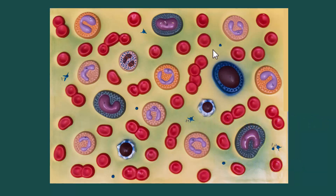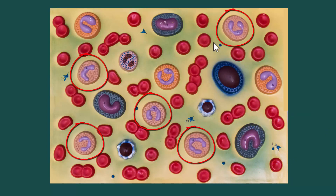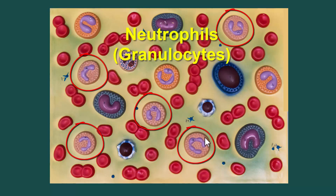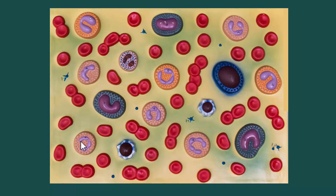The most common leukocyte is this one right here with the number four on it — those are neutrophils. Neutrophils are going to have multi-lobed nuclei, and as they get older they're going to have more and more lobes. When they first appear they are not quite as segmented, so we would call this a band cell.